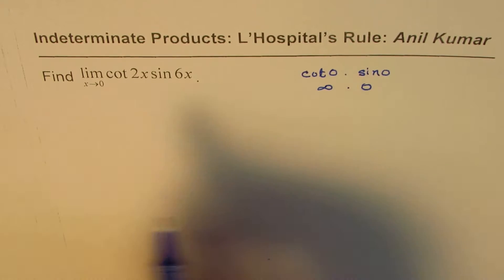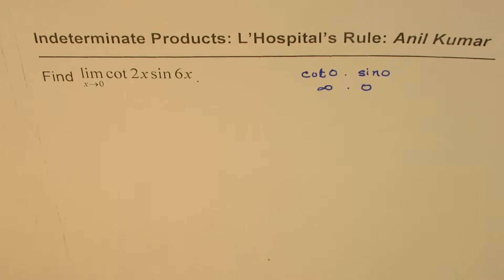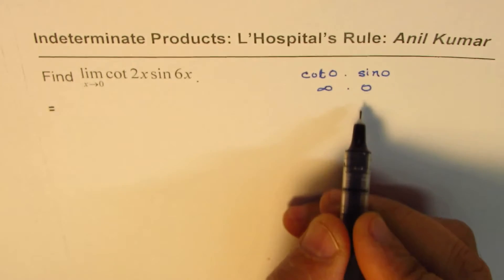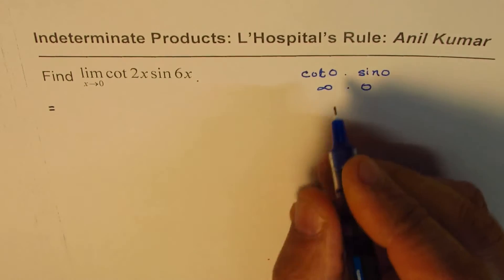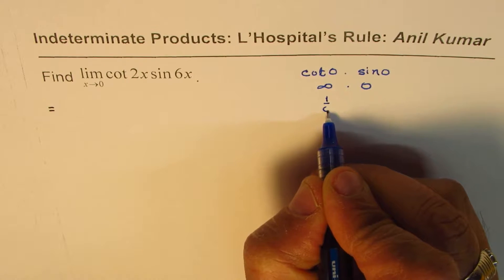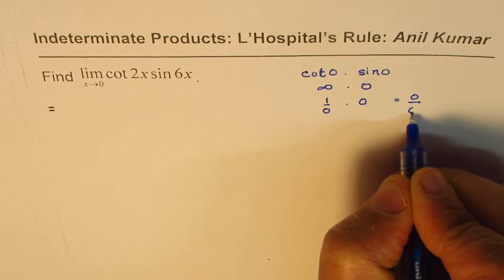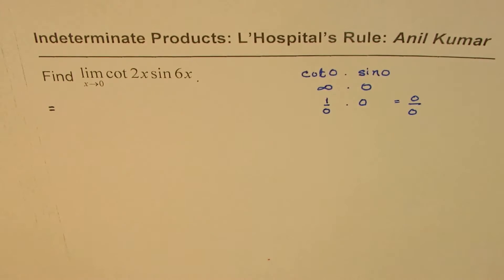Now to solve such questions, what we should do is rewrite this expression in the form that we have 0 over 0, since infinity could be written as 1 over 0. Does make sense? So it becomes like kind of 0 over 0. So that's the strategy to understand.